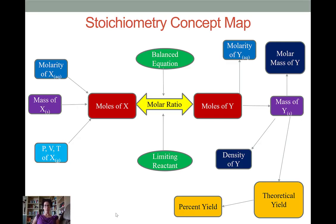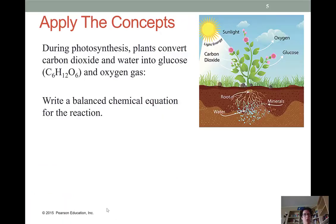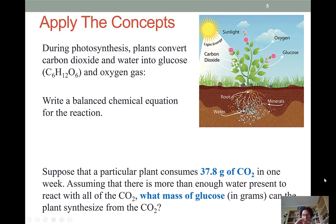So here's an example of a big problem. During photosynthesis, plants convert carbon dioxide from the air and water up from their roots into glucose and oxygen gas. Write a balanced chemical equation for the reaction. We will then use stoichiometry to answer the problem: supposing that a particular plant consumes 37.8 grams of CO2 in one week and assuming that there is more than enough water present to react with all the CO2, what mass of glucose in grams can the plant synthesize from that amount of CO2?